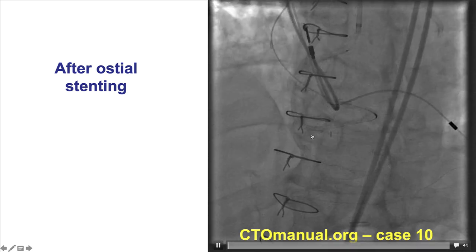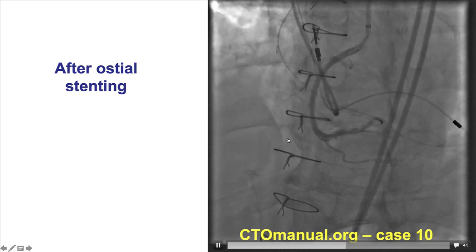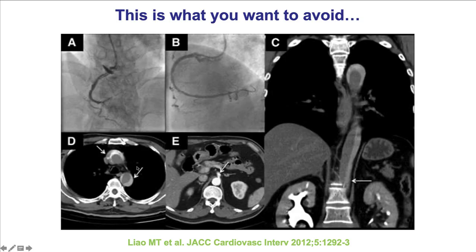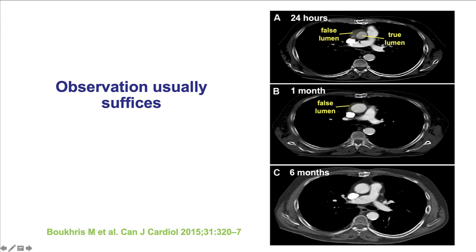There was no treatment done for the most distal dissection. The patient was brought back several weeks later. The concern and fear for aortocoronary dissections is extension of the dissection all the way down to the ascending aorta and potentially even the descending aorta, because that might need surgery. In most cases, if this is diagnosed early and injections are stopped, the aortocoronary dissection heals over time — between 24 hours, 1 month, and 6 months, there is a natural resolution of the dissection.